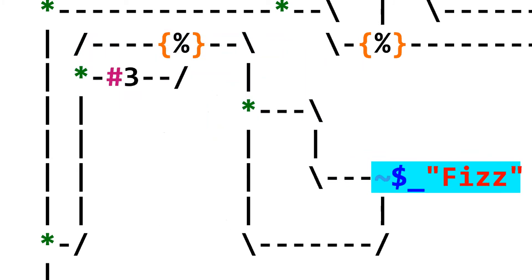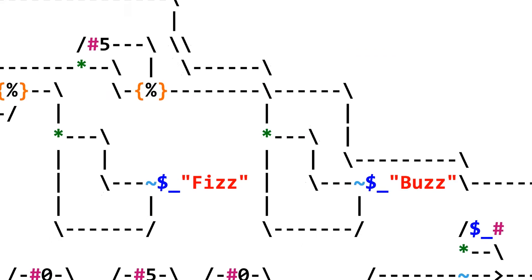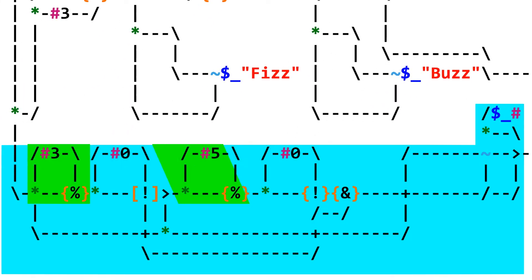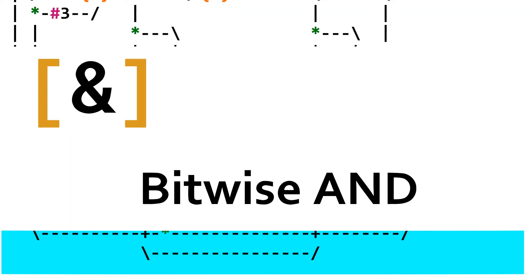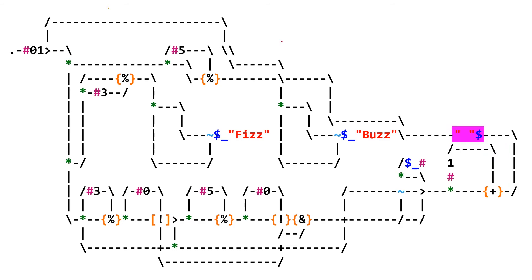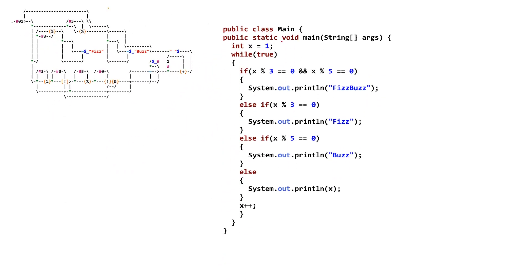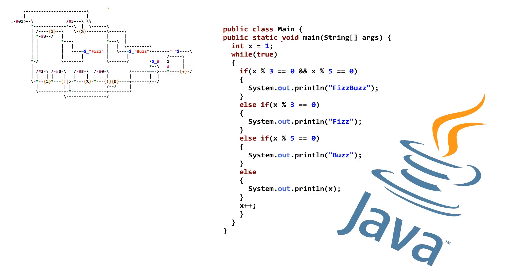This value is fed into a tilde to determine whether or not to output fizz. A similar structure checks x modulo five to determine whether or not to output buzz. The bottom half of the program checks if x modulo three and x modulo five are both not equal to zero; if x meets this requirement, the number itself is printed. This makes use of the not-equal operation and a bitwise and operation. The last thing the dot does is increment x by one and output a new line before cycling back to the start. This program is way easier to make in a normal language like Java — it took probably ten times as long to write the FizzBuzz program in ASCII Dots.